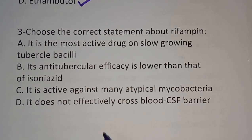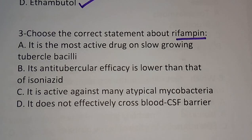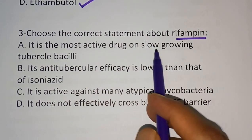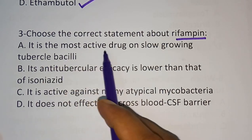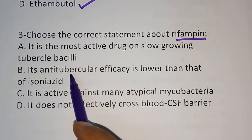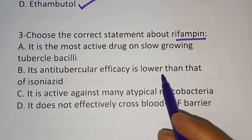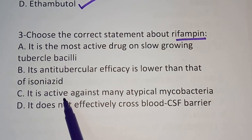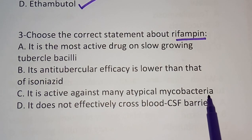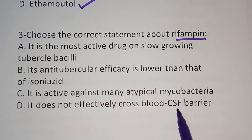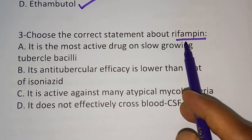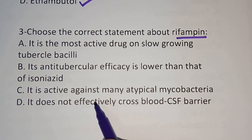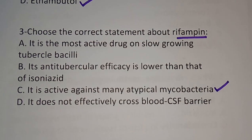Question number 3: choose the correct statement about rifampicin. Option A: it is the most active drug on slow-growing tubercle bacillus. Option B: its anti-tubercular efficacy is lower than that of isoniazid. Option C: it is active against many atypical mycobacteria. The correct statement about rifampicin is option C — it is active against many atypical mycobacteria.